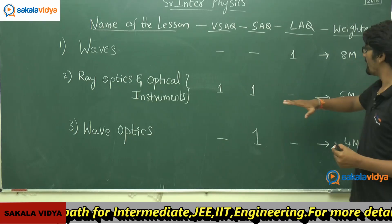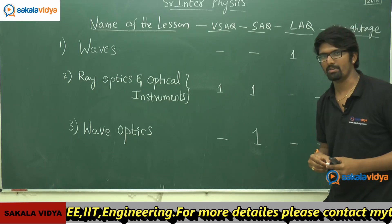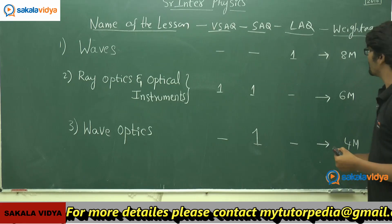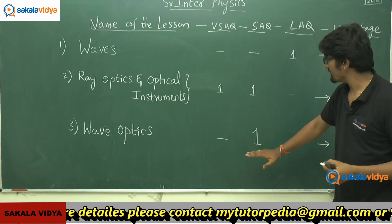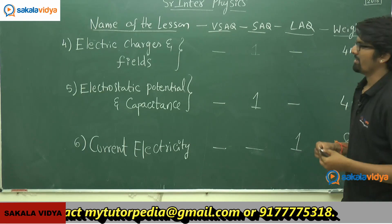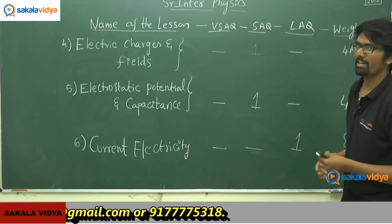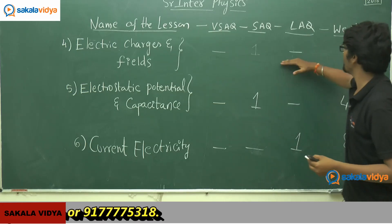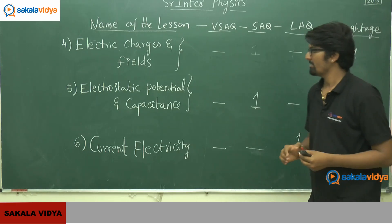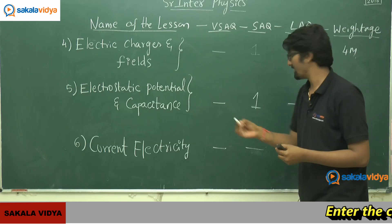The total weightage of the second chapter is 6 marks with no LAQ. The third chapter is Wave Optics, with a weightage of 4 marks — we are going to expect only one SAQ, no VSAQ, and no LAQ. The fourth chapter, Electric Charges and Fields, also carries 4 marks — one SAQ, no VSAQ, and no LAQ. The fifth chapter, Electrostatic Potential and Capacitance, has a weightage of 4 marks with one SAQ, no VSAQ, and no LAQ.